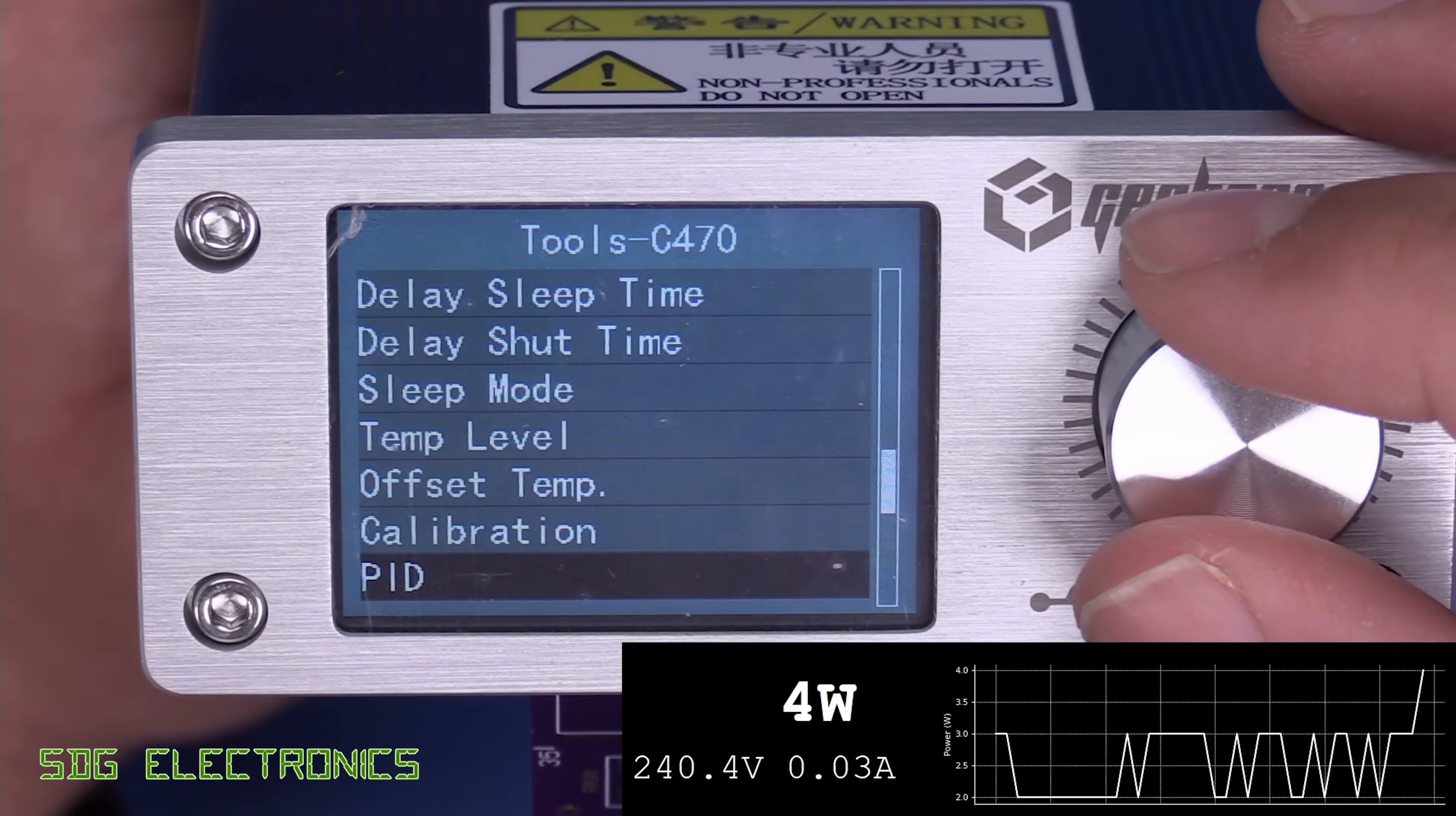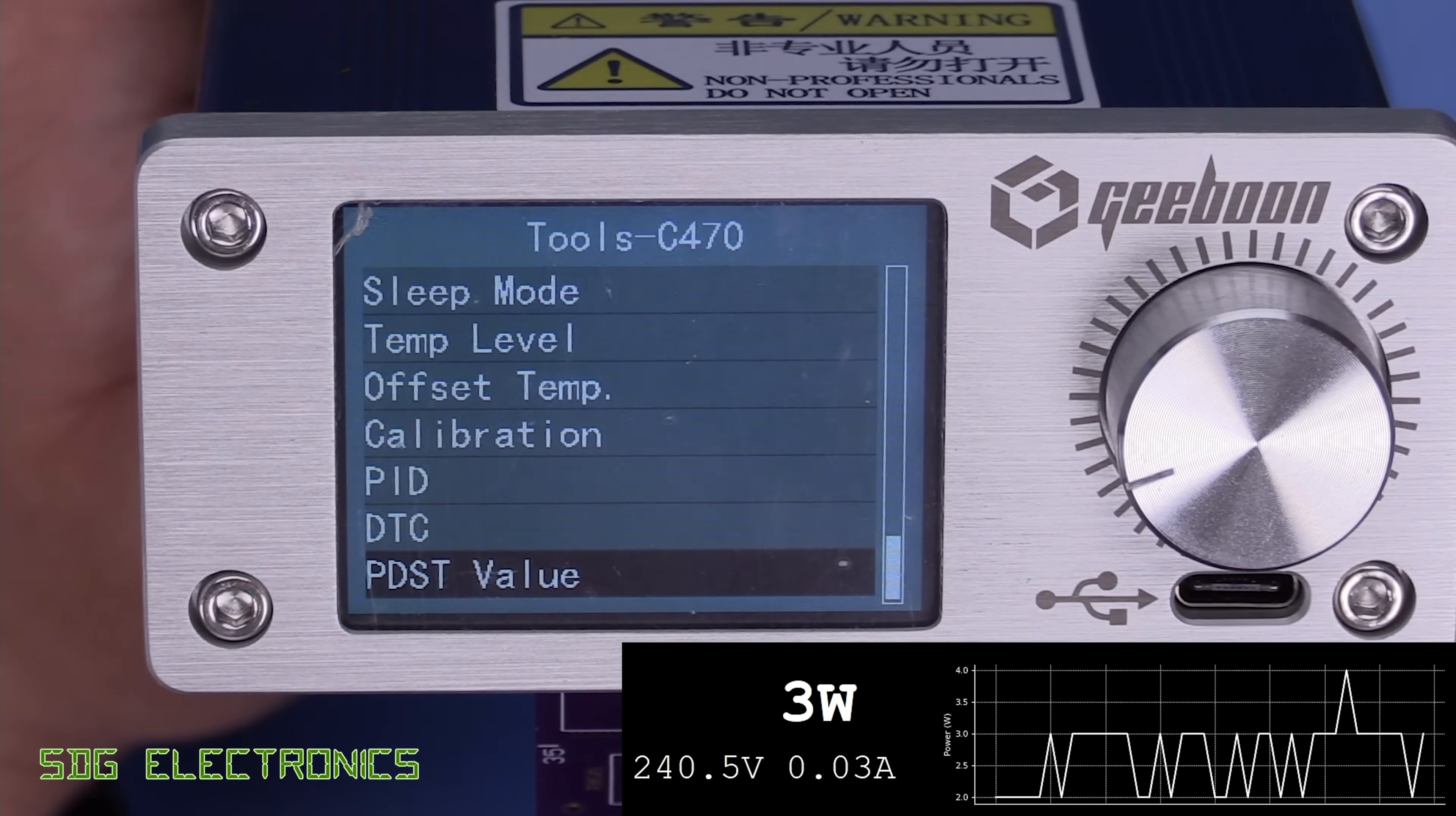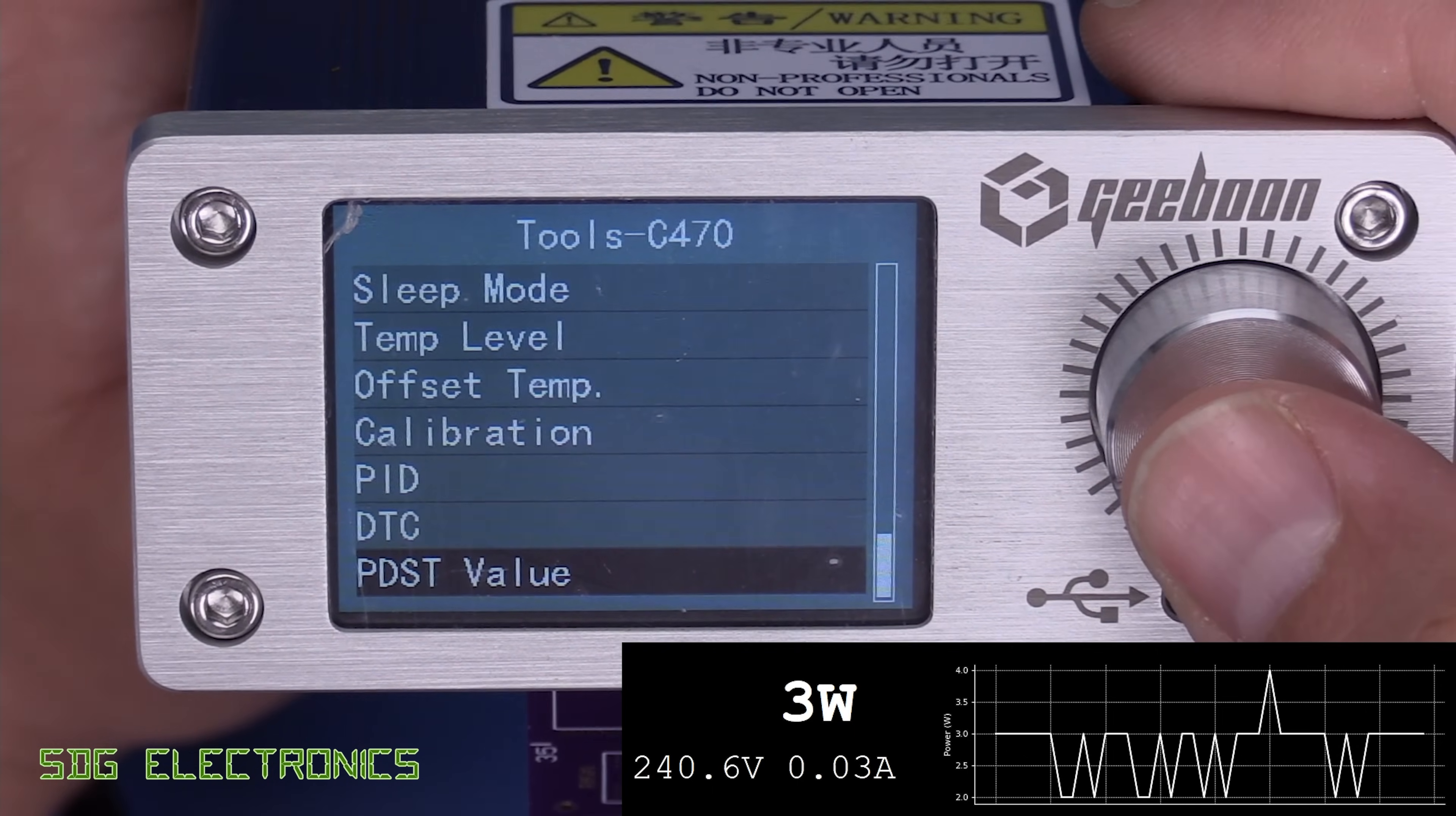We've got calibration options now. So offset temperature, as well as the multipoint calibration, we can adjust the PID loop. And then we've also got some settings here. So DTC and PDST. So these are enabling us to change the settings for the power level when it decides that it's going to go into sleep mode.